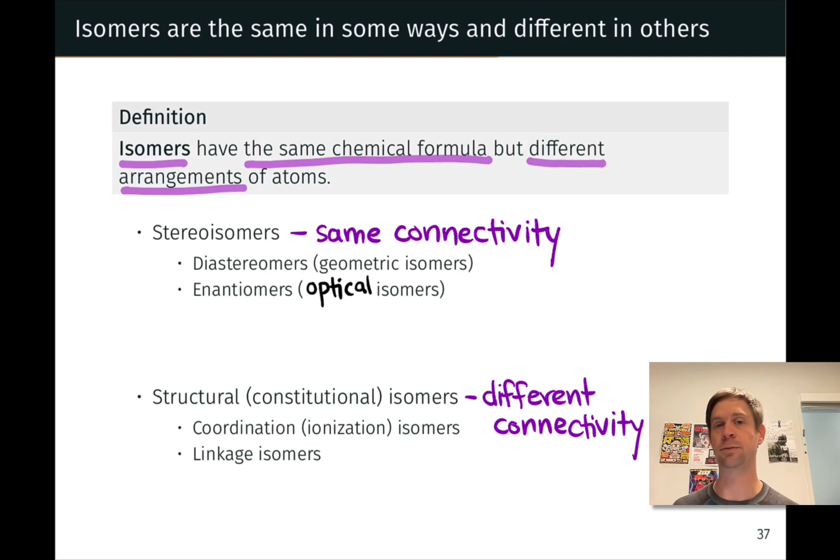diastereomers and enantiomers. The two classes differ in whether or not the molecules we're comparing are mirror images of each other. Stereoisomers that are not mirror images are known as diastereomers. Stereoisomers that are mirror images are called enantiomers, and enantiomers are about as similar as two molecules can get without being identical. Enantiomers have very similar properties but differ from each other in important ways that you'll primarily explore in organic chemistry courses.